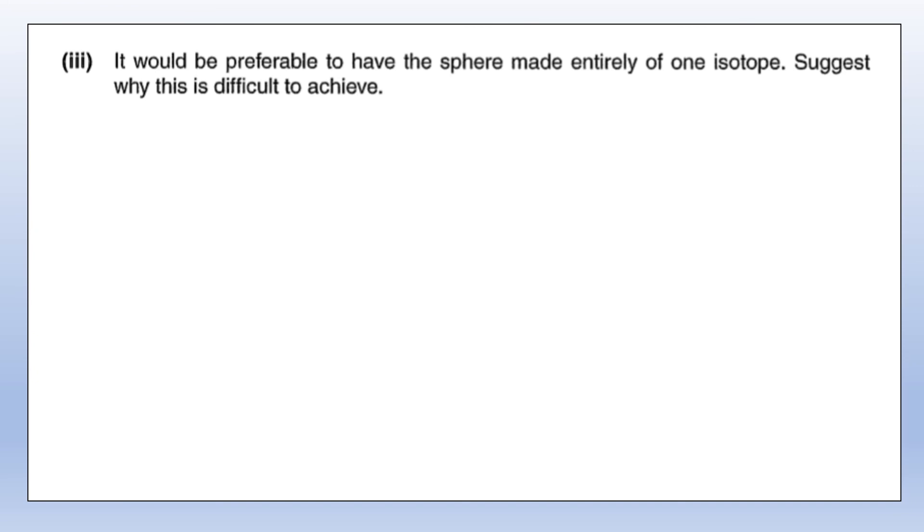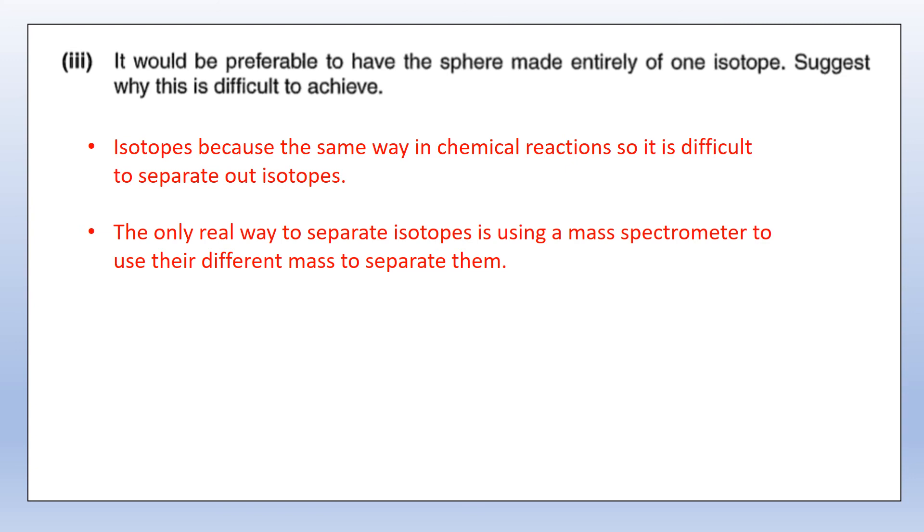It would be better if we only had one isotope involved - it would make our calculations much easier. But why is that going to be a problem? The main problem is that isotopes pretty much behave the same way, especially in terms of chemical reactions. They've got the same number of electrons, so they behave pretty much in the same way. It's pretty tricky to separate out isotopes. The only real way we've got to do it would be using a mass spectrometer, where we can use the different mass of the isotopes as a way of separating them out. That is actually how we know the percentage abundance of the different isotopes, but it's not an easy process.